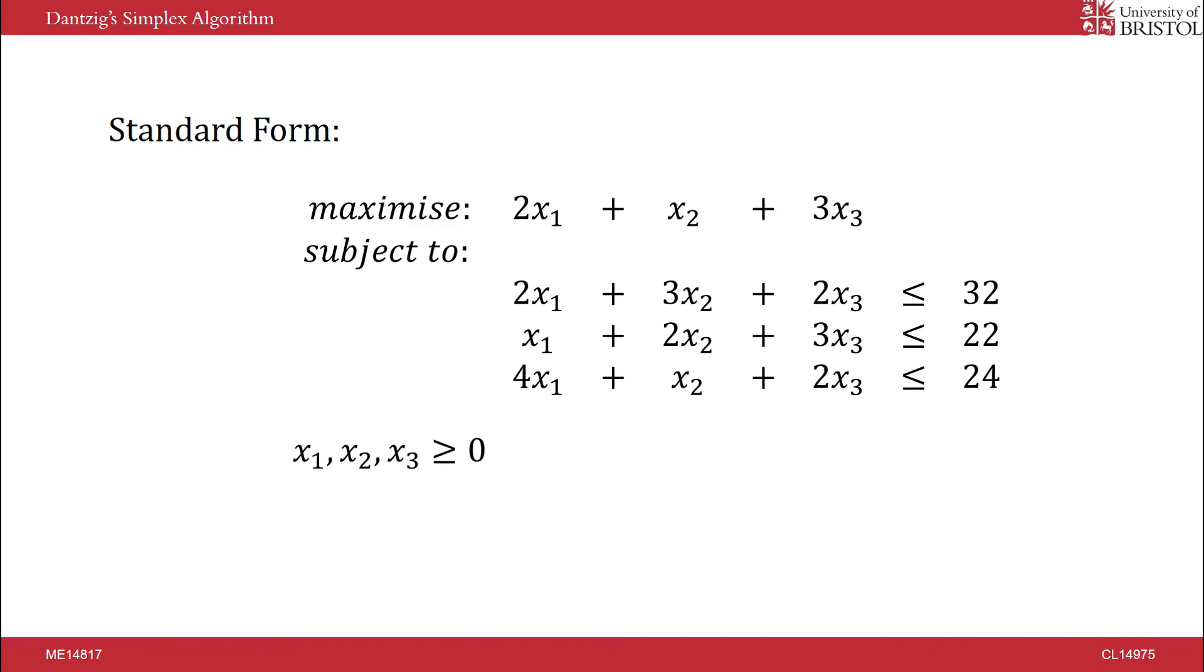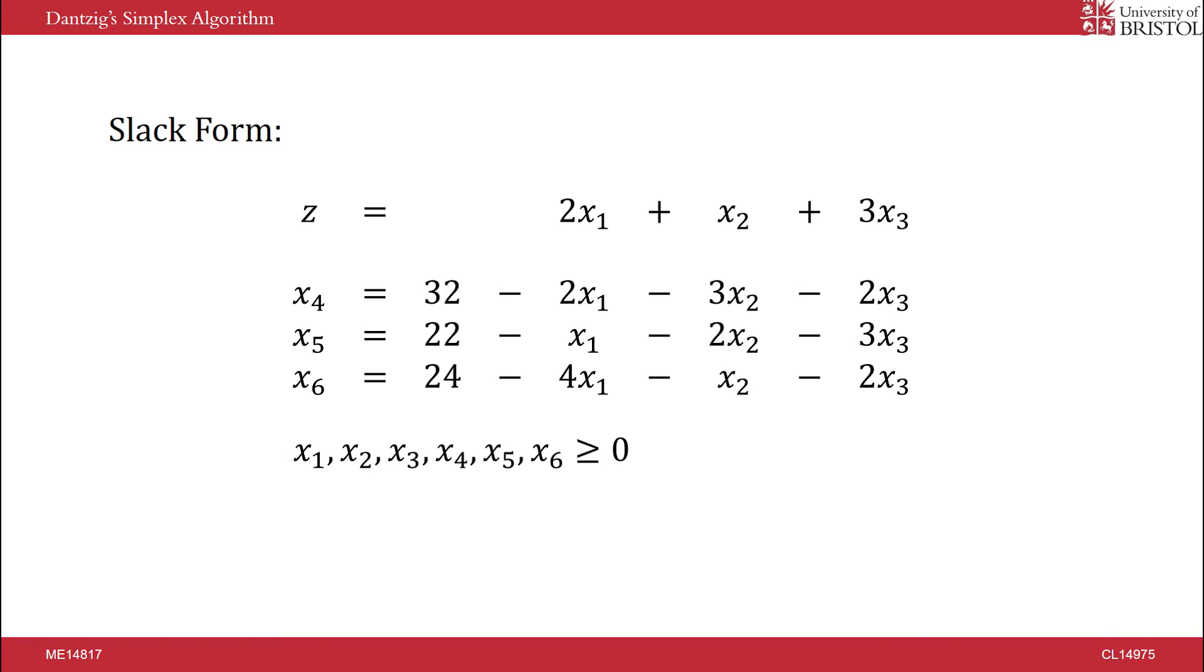The first step the simplex algorithm does is convert the standard form linear program into what is called slack form. This involves introducing a new variable for each of the constraints. The role of this variable is to measure the difference between the left and right hand side. So we introduce x4, x5, and x6, and set them equal to the difference between the left hand side and the right hand side. We must also have non-negativity constraints for these new variables.